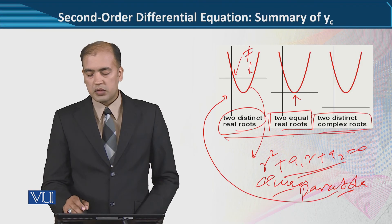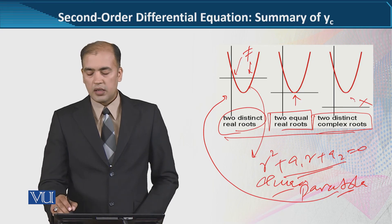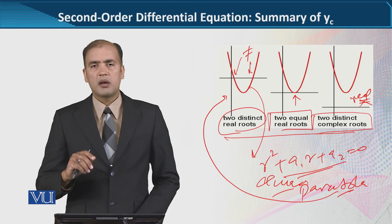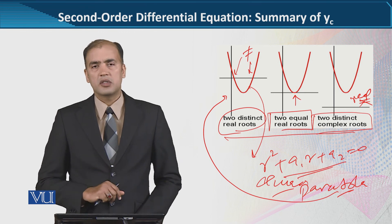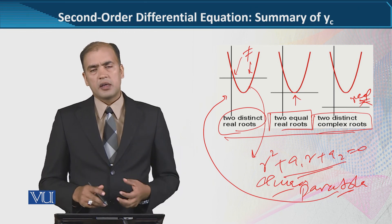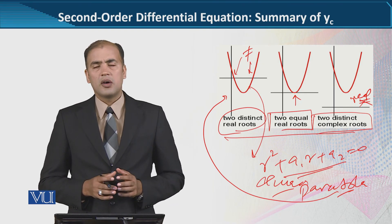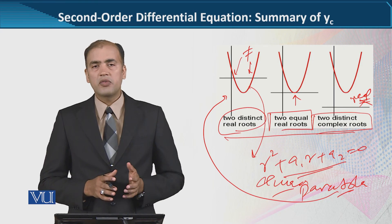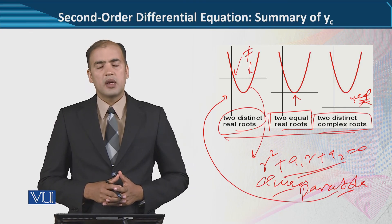Two distinct complex roots کے case میں کسی بھی جگہ پر intersection نہیں ہے، کیونکہ real axis پر intersect کرنا اسے real case بنا دیتا. لیکن یہ imaginary numbers پر based ہے اس لئے there is no intersection. So here what we have done is we have summarized all these details of all three cases so that we could compare them and recall the correct formula whenever we are to solve a second order differential equation. Thank you.